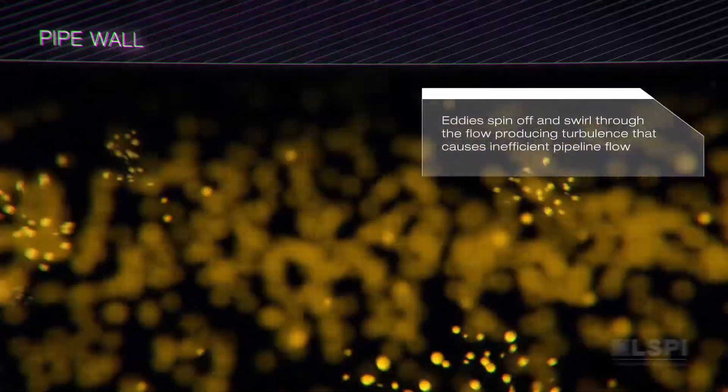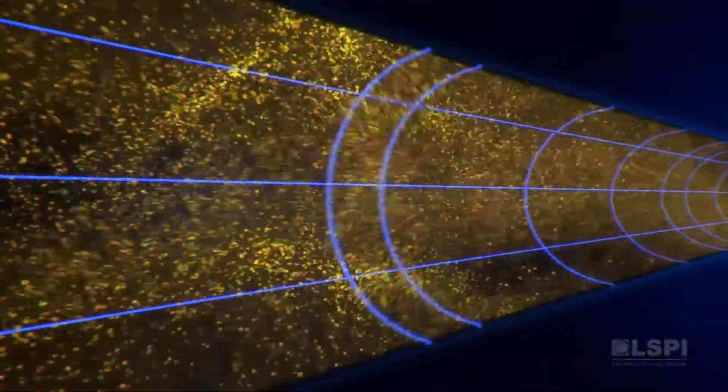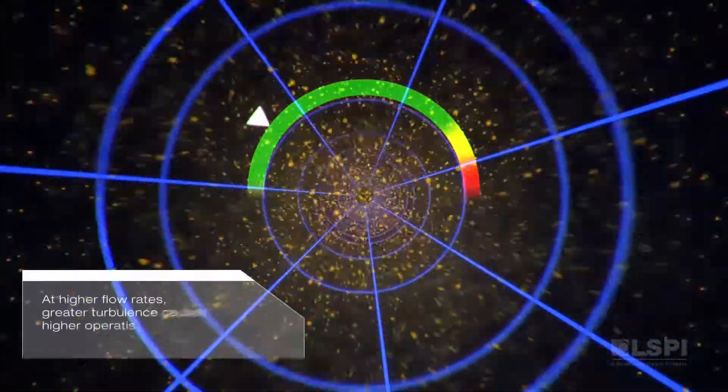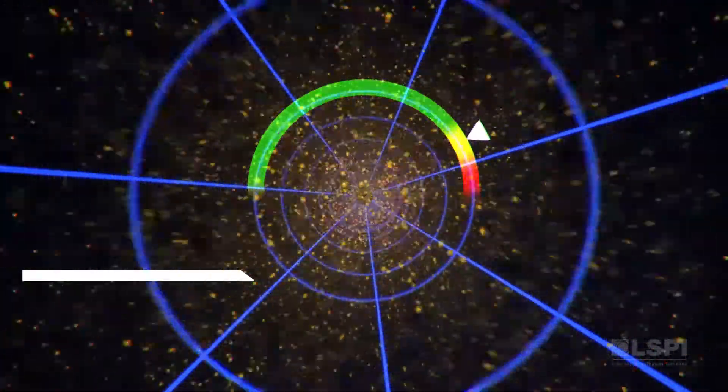Eddies spin off and swirl through the flow, producing turbulence that causes inefficient pipeline flow and wasted energy. At higher flow rates, greater turbulence causes higher operating pressure, limiting the throughput of the pipeline.